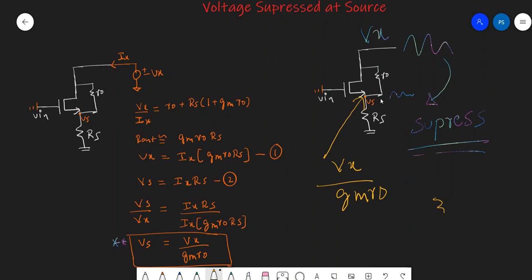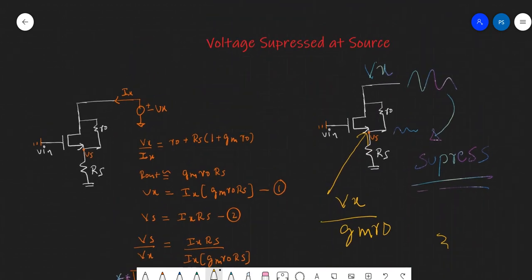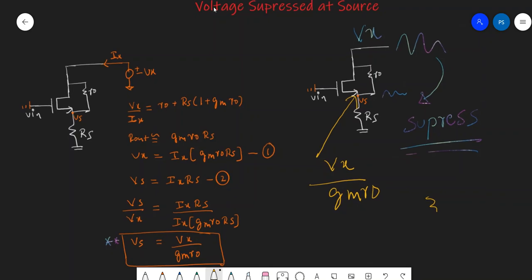We can say the voltage change here is very much smaller compared to the voltage change at the drain. So this concept is called voltage suppression at the source, and this is happening because of some source resistance connected here. This is one more advantage of having a source resistance.